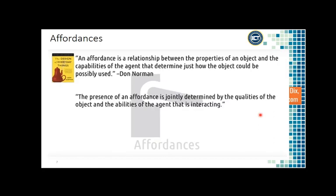Norman also says that the presence of an affordance is jointly determined by the qualities of the object and the abilities of the agent interacting with it. An affordance for one person isn't an affordance for everyone. If you didn't grow up around door handles, maybe that door handle doesn't have an affordance for you the way it would for someone who did. Our affordances depend on social norms and cultural differences, and what you already know you can leverage to perform a certain action in an interface.